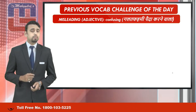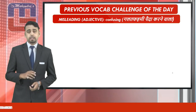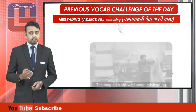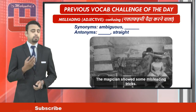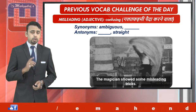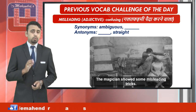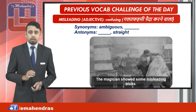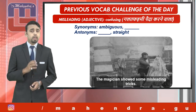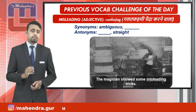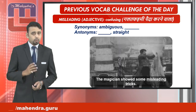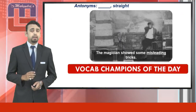The word was 'misleading,' which being an adjective meant confusing. Here's the usage and the synonym and antonym for you. You have to tell us what's the missing synonym and what's the missing antonym that we had told you in one of the previous sessions of Visual Vocabulary.